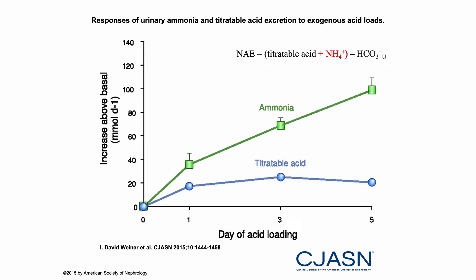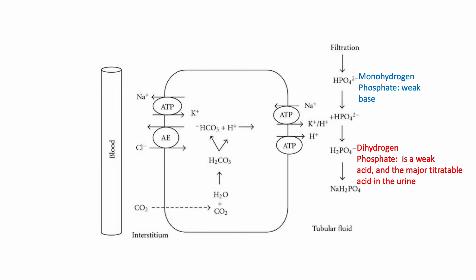The main role again belongs to ammonia, whether you have an exogenous or endogenous acid load. For titratable acidity, the main thing is phosphate. We have monohydrogen phosphate HPO4 2-minus, which is a weak base. When it binds to hydrogen, it becomes H2PO4 negative — dihydrogen phosphate — which has two hydrogens and is a weak acid.